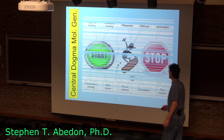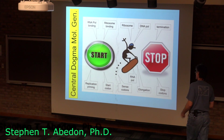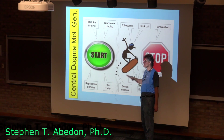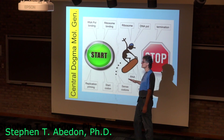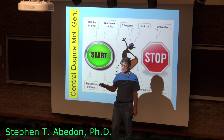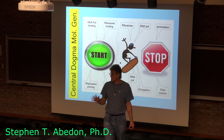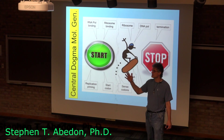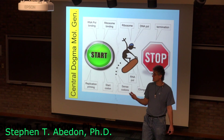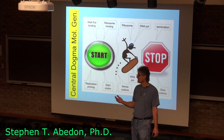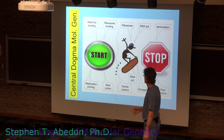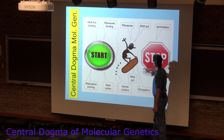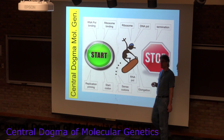Each of these steps — replication, transcription, and translation — all have three basic steps involved. First, they start. Second, you have elongation, which is the polymerization step. And third, they stop. So each one has a start, an elongation step, and a stop step.